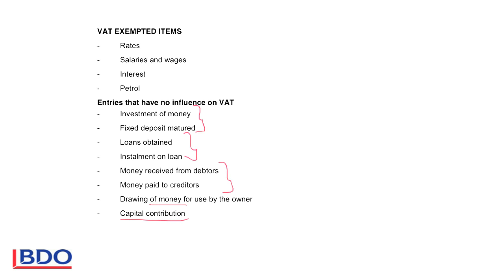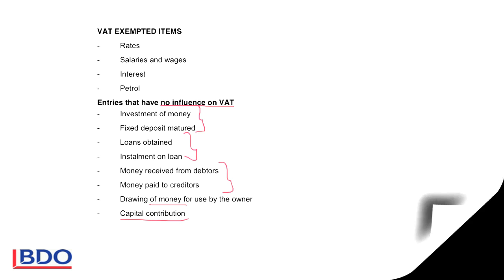Please pay attention to these entries that have no influence on VAT: investments or fixed deposits, loans, instalments on a loan, and interest on a fixed deposit or loan — none of these have a VAT influence. If you receive money from a debtor or pay money to a creditor, there is no effect on VAT. The money the owner takes for himself is his own money taken out of the business into his private account. If the owner contributes capital, he takes money from his own account and puts it into the business account — so there is no effect on VAT.